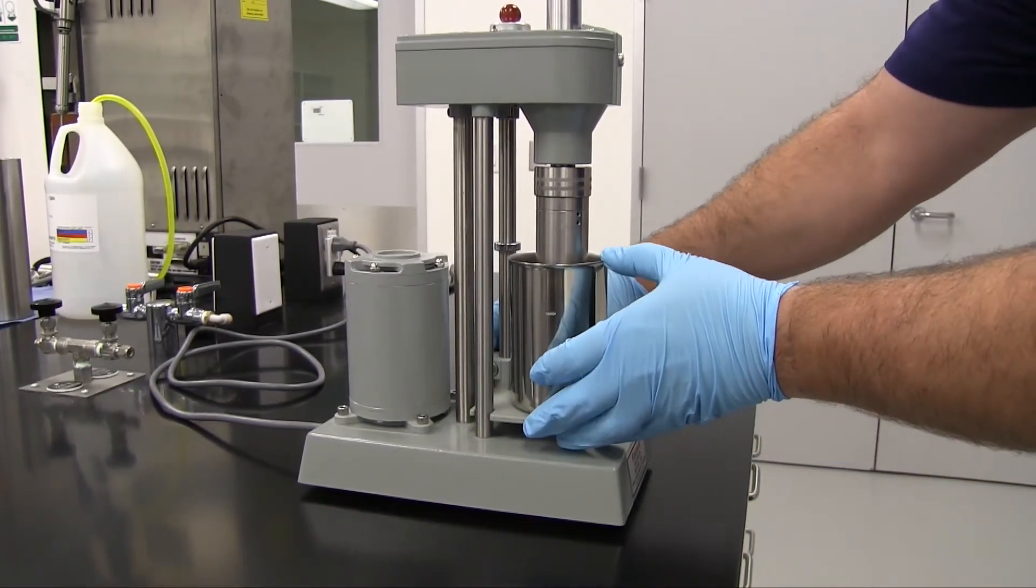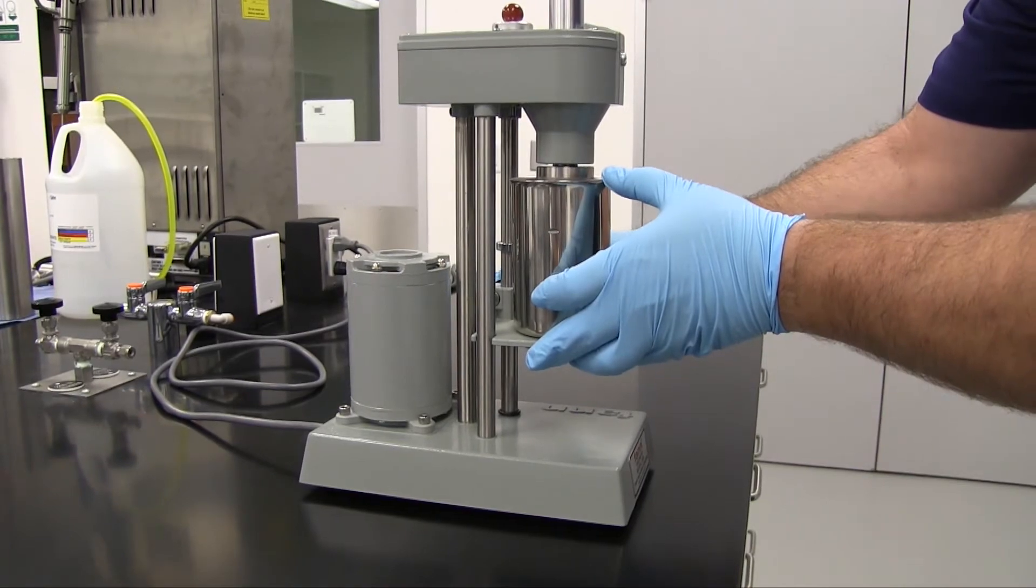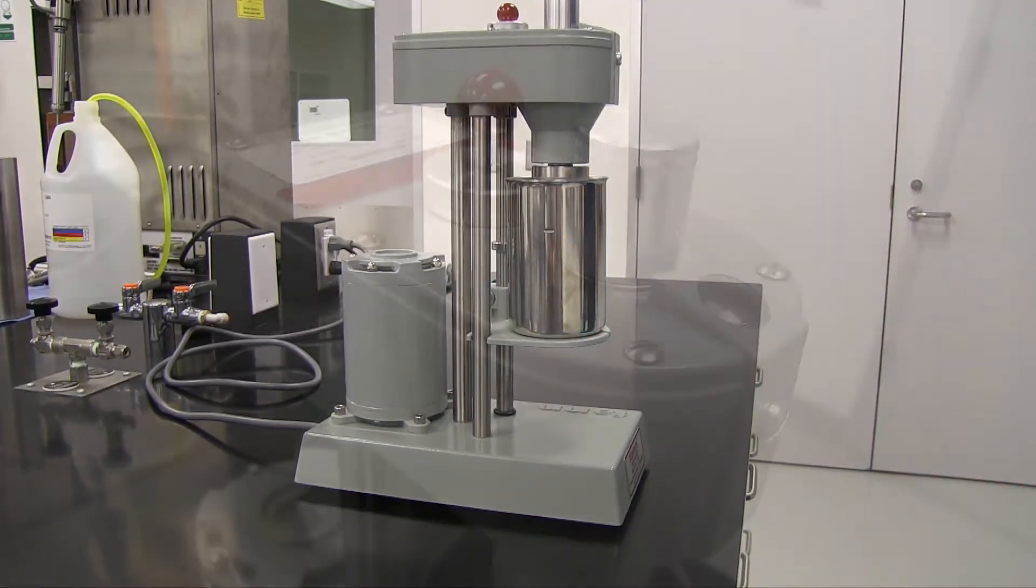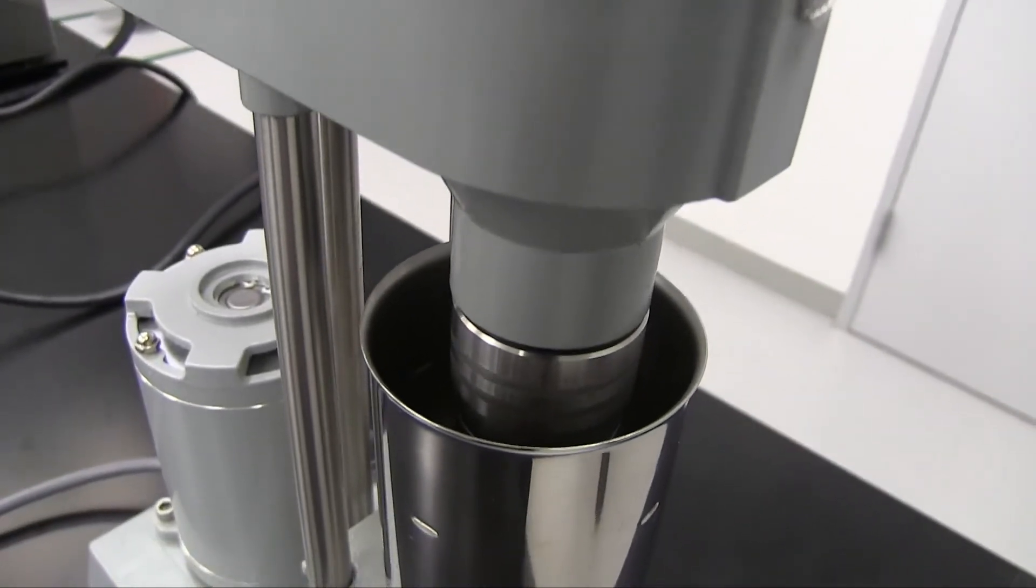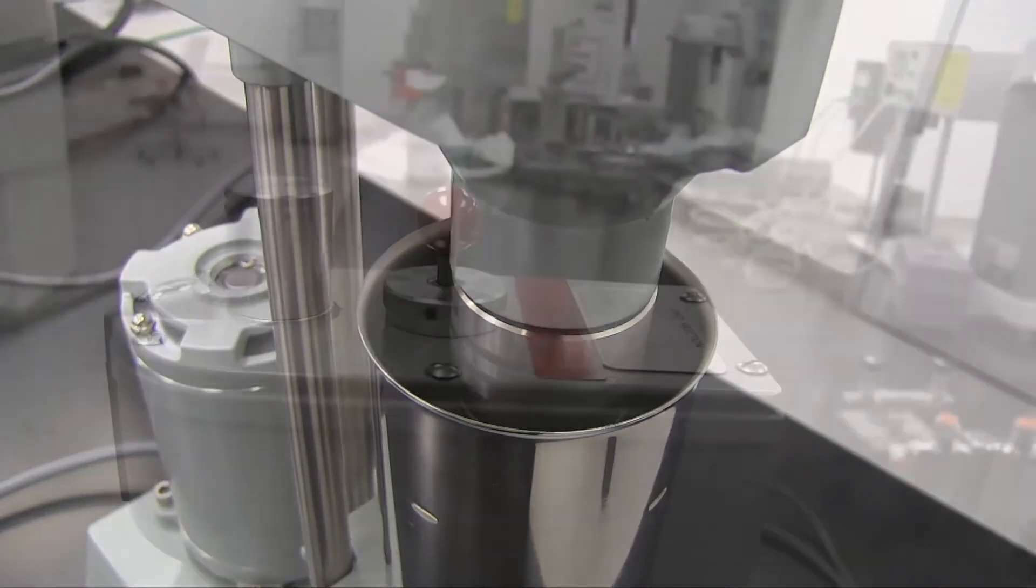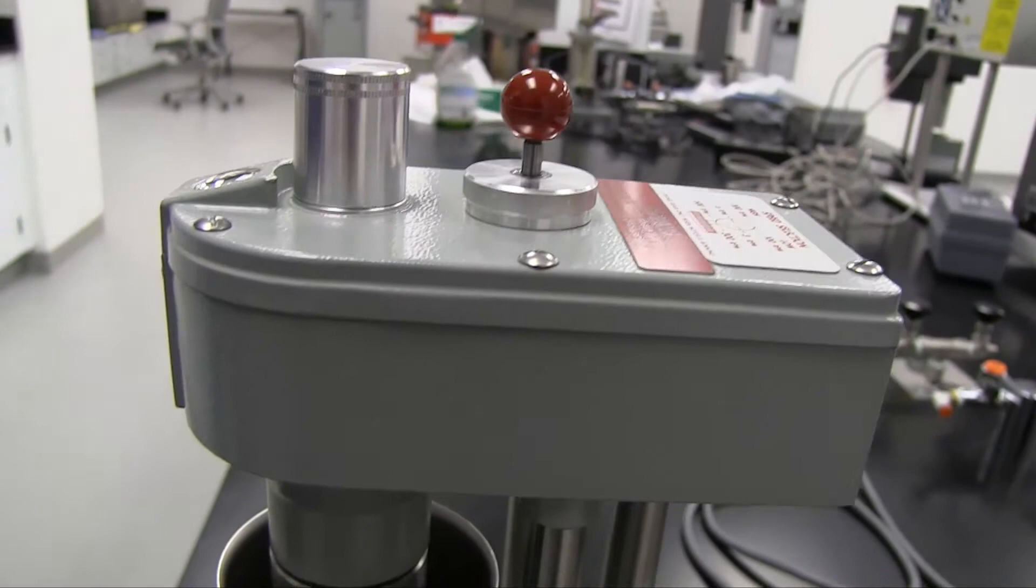A measured sample of fluid is placed in the cup and the stage is raised, lifting the cup. Precision gearing allows the rotor sleeve to rotate at known speeds. The viscous drag exerted by the fluid creates a torque on the bob.